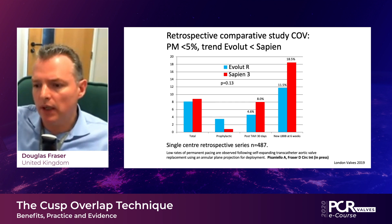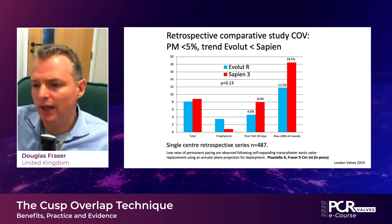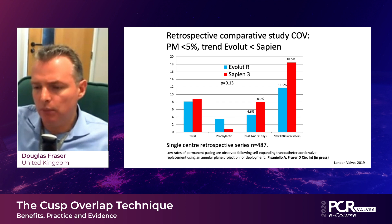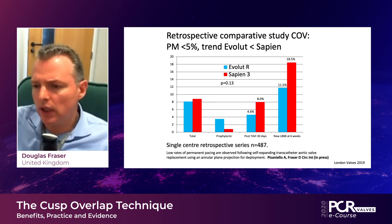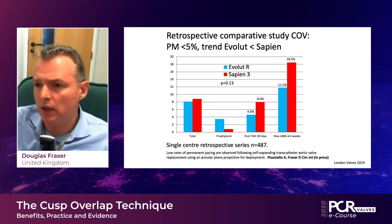We looked at our pacemaker rate. We'd been a SAPIEN center for many years, and when we took on Evolute, we actually found that our pacemaker rate was lower with Evolute valves than it was for our SAPIEN valves historically. We got a sub-5% pacemaker rate using this cusp overlap technique, which is really a lot lower than what's been described in big studies. That really confirmed to us that there's something in this.